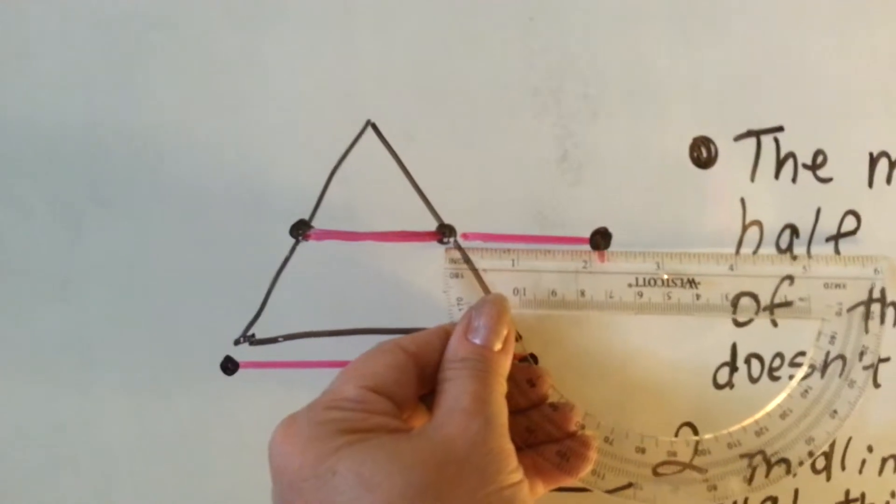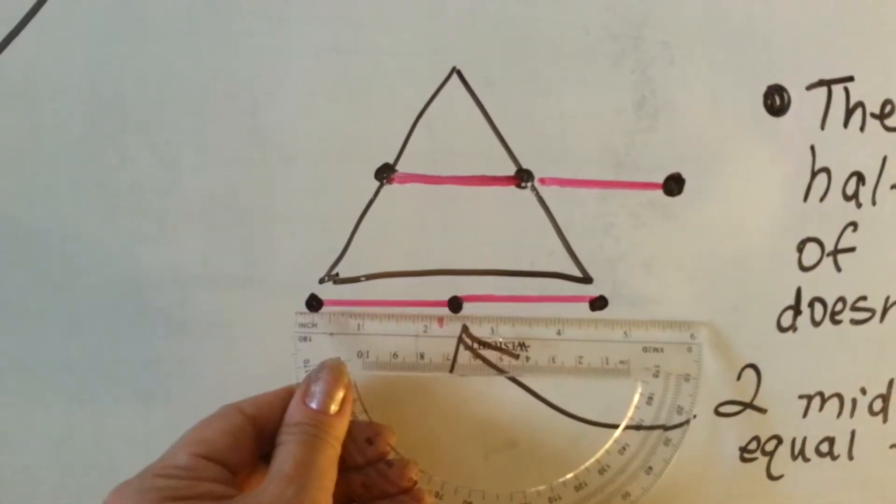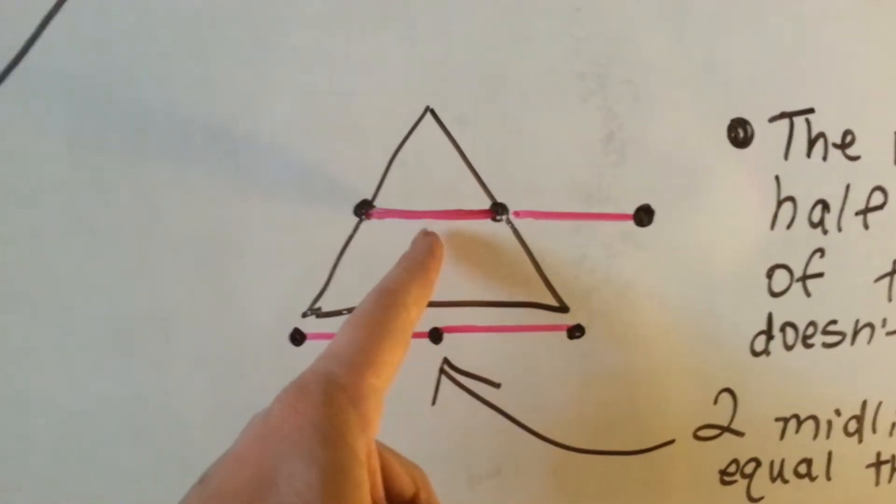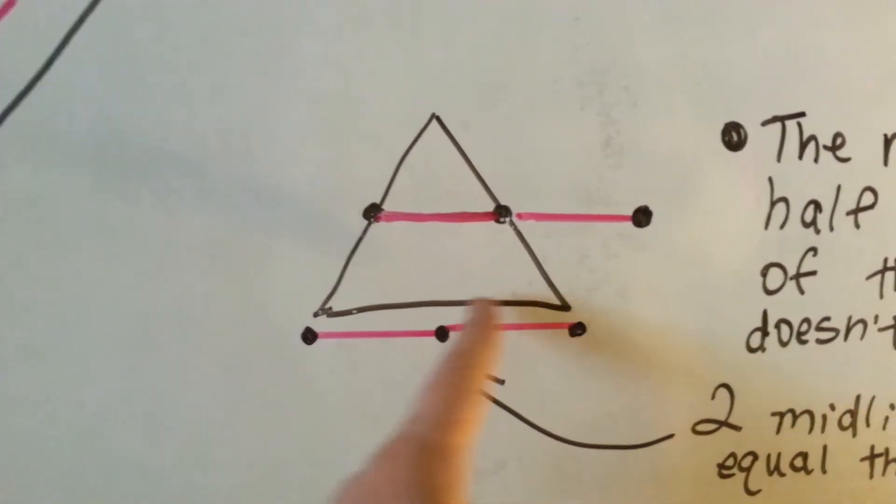Okay? See that? And that is, there's one here and there's one here. This is exactly half the length of this one.